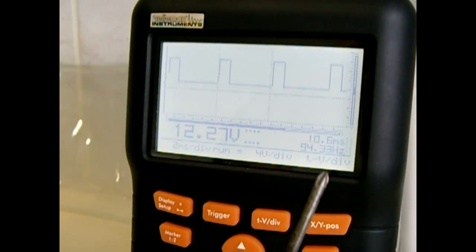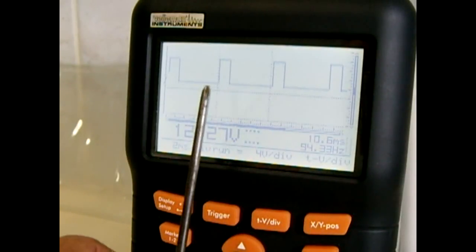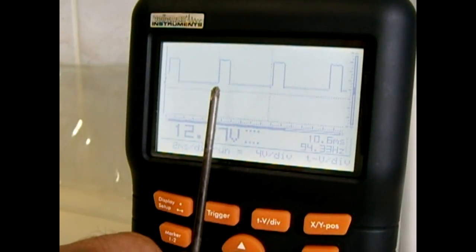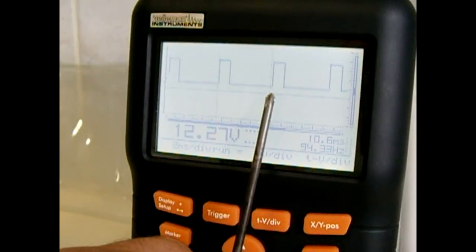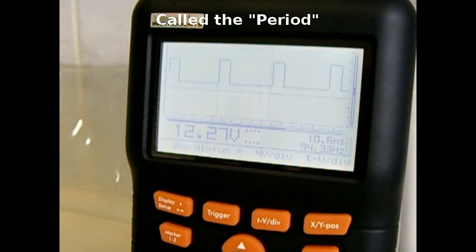As you can see here, it's around 94, 95 hertz. So the cycle is the beginning of this pulse to the beginning of the next pulse.